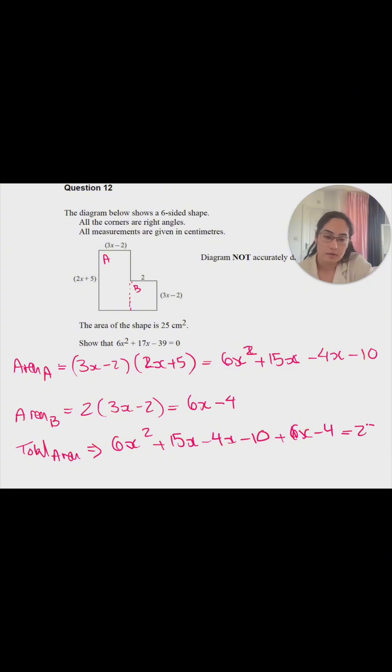Now if we simplify this whole term, we have a lot of x's and numbers. That is 6x² plus 15x - 4x gives us 11x, plus 6x gives us 17x.